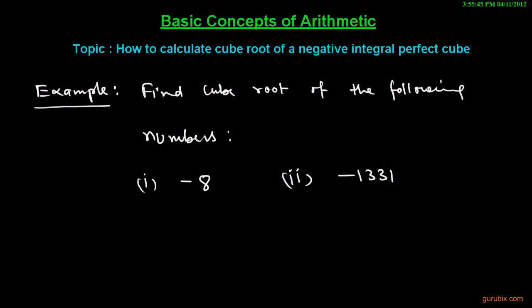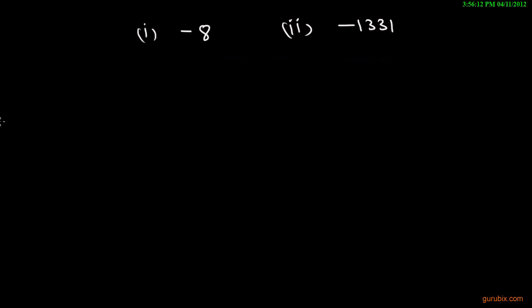Welcome friends. In this video we shall learn how to find the cube root of a negative integral perfect cube, and we shall learn this by an example. The example is: find the cube root of the following numbers — minus eight, and minus one thousand three hundred and thirty one.